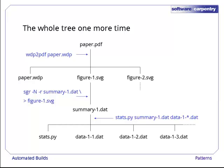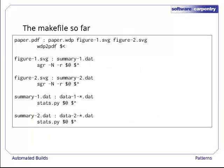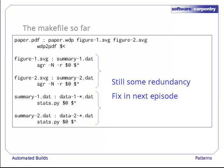Here's our dependency tree one more time. And here's our makefile. There is still some redundancy. We have exactly the same logical rules for our two data series, but have to write them down separately because the 1 and 2 in their names are different. We'll see how to fix this in the next episode.